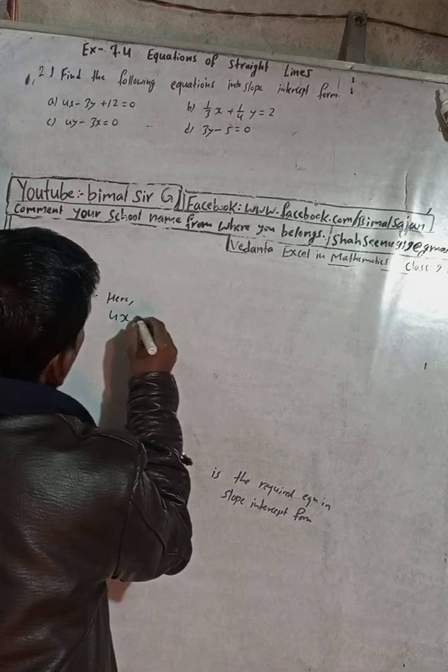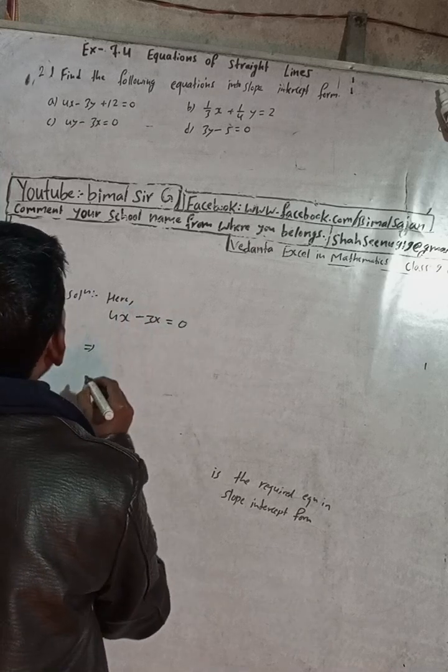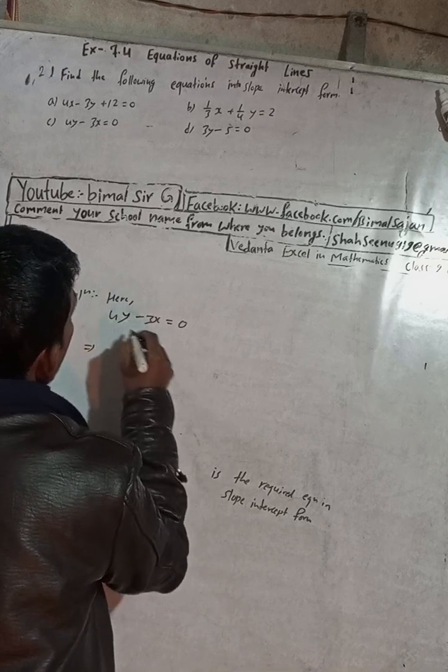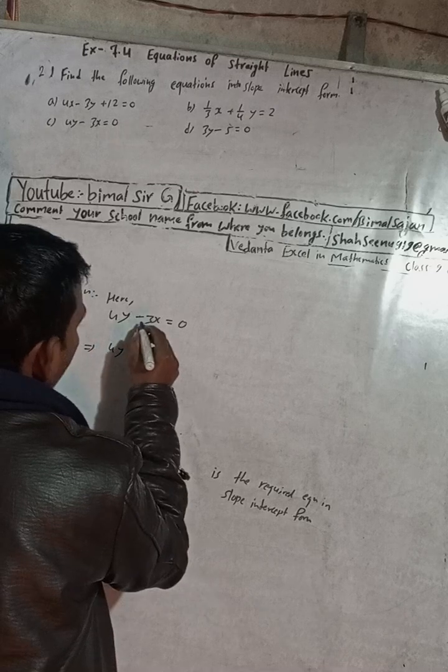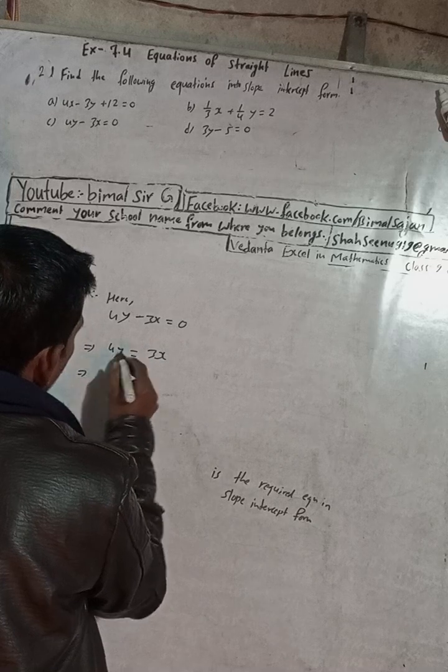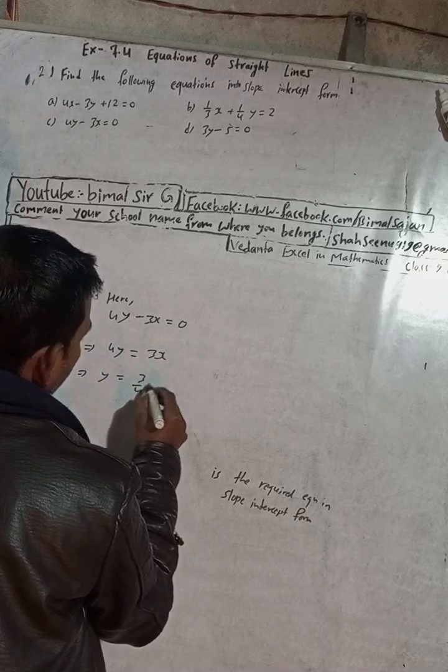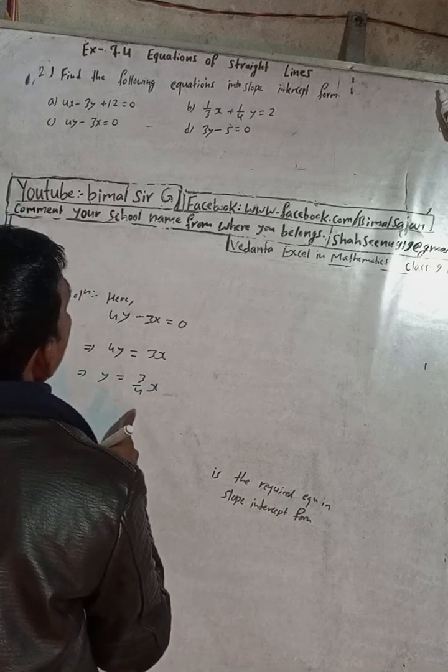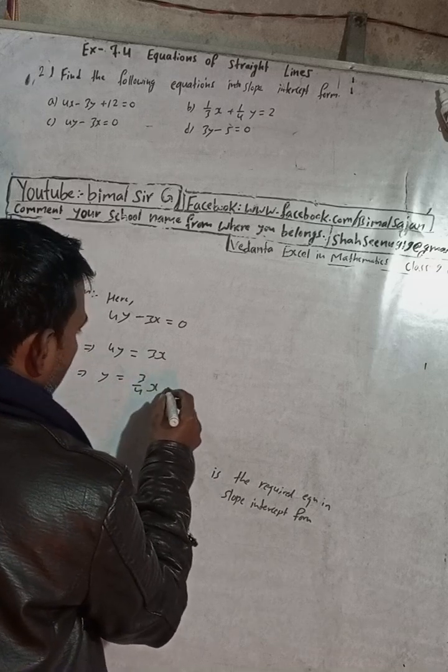Number c: 4y - 3x = 0. This means 4y on the same side, and -3x takes to that side, it becomes +3x. Now take this 4 to this side: y = 3x/4. This is the required equation in slope-intercept form, 3/4x plus c.